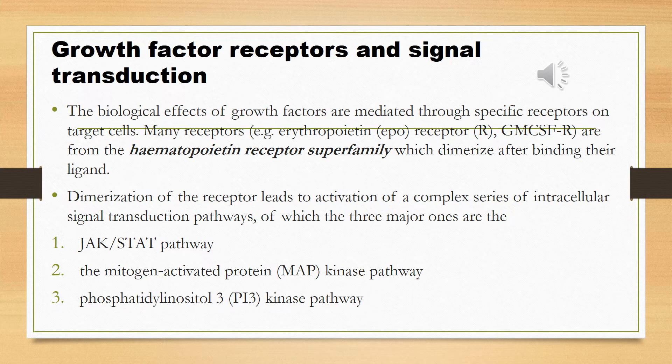Receptors and signal transduction pathways are important from a UHS exam perspective, as a few MCQs have appeared from the growth factors table. The most important table is the site where blood cells form — the first table of the lecture. You must know the names of these pathways for the UHS exam.